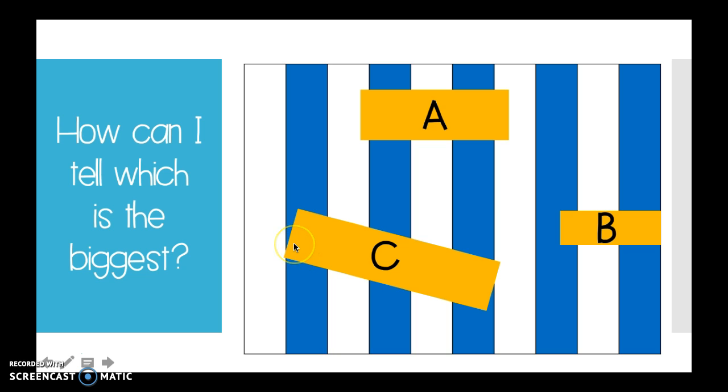Let's look at C. I know that he's kind of crooked, but let's see about how many stripes C takes up. One, two, three, four, five. Oh my goodness. C is definitely the biggest. Do you see how I used the lines behind them to figure out how big all the parts were when I didn't have a chance to move them?